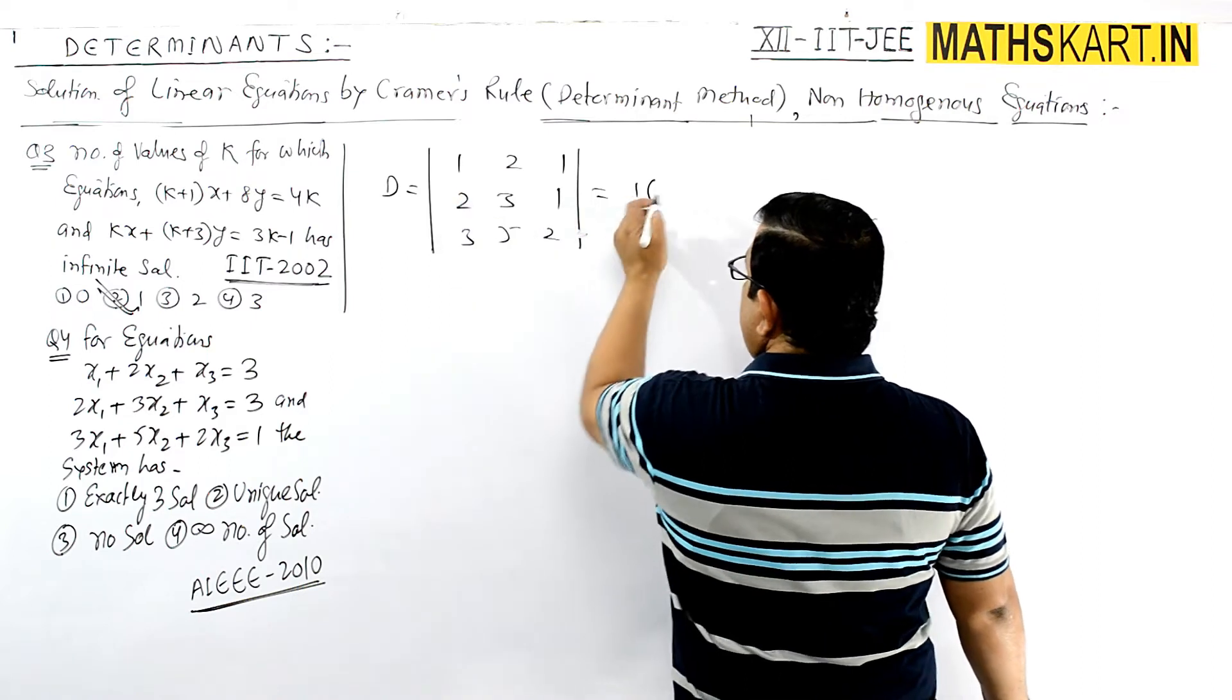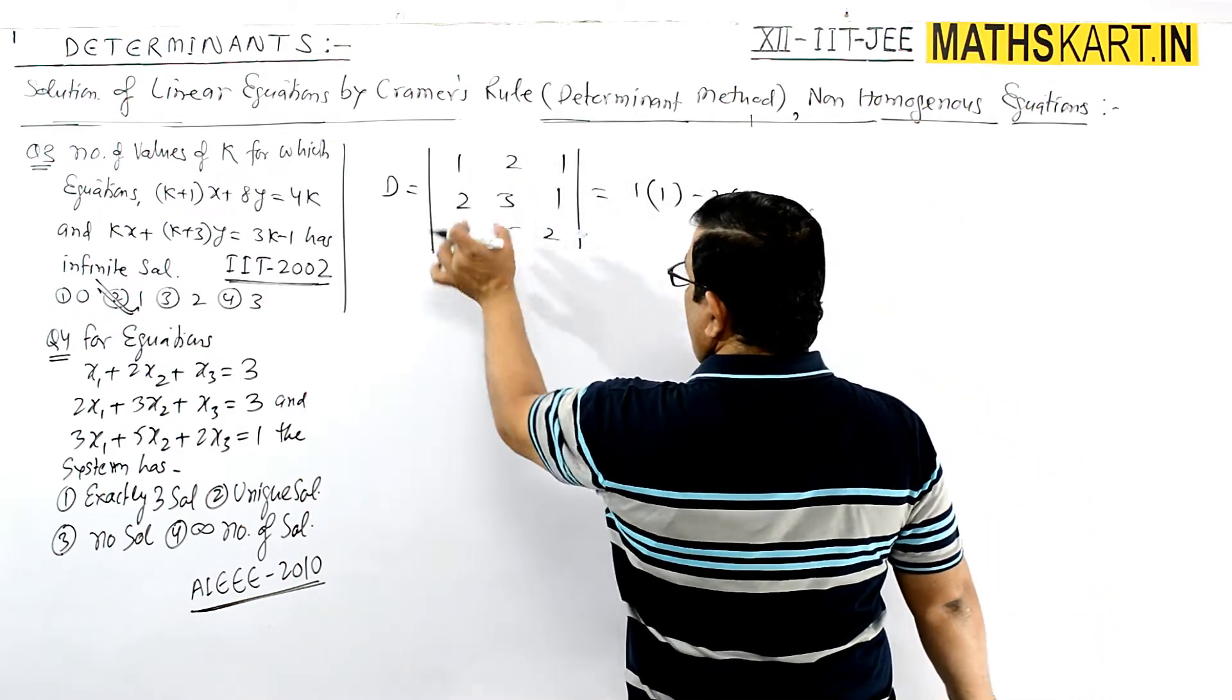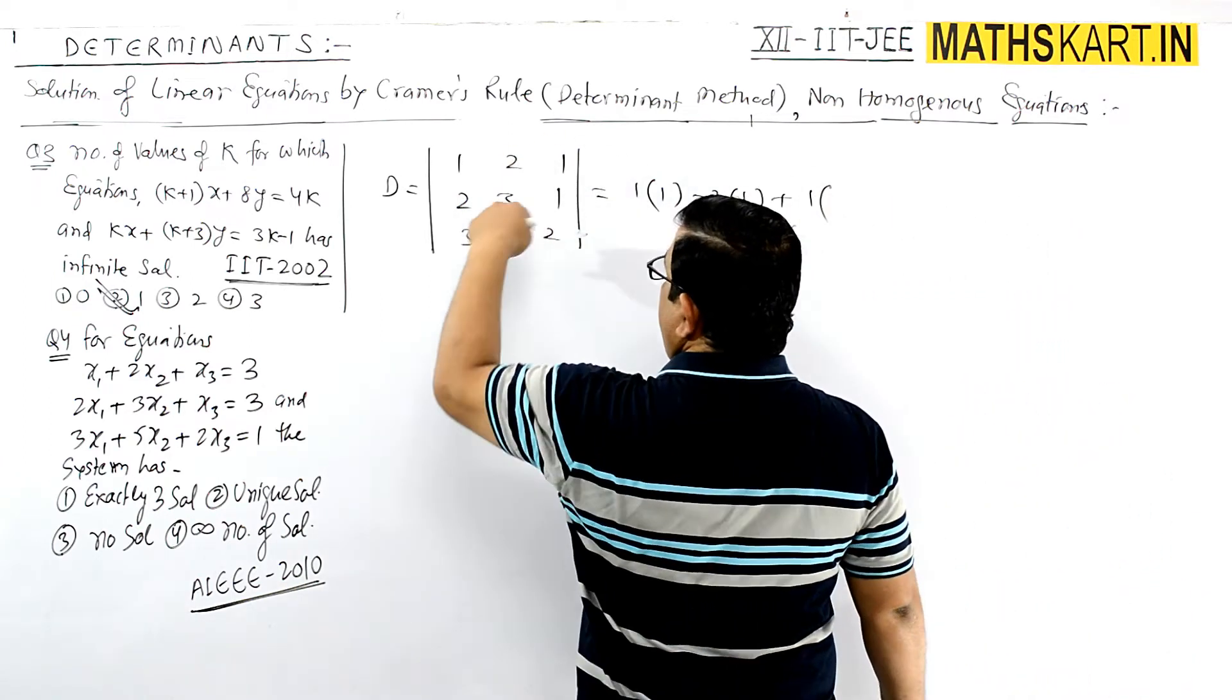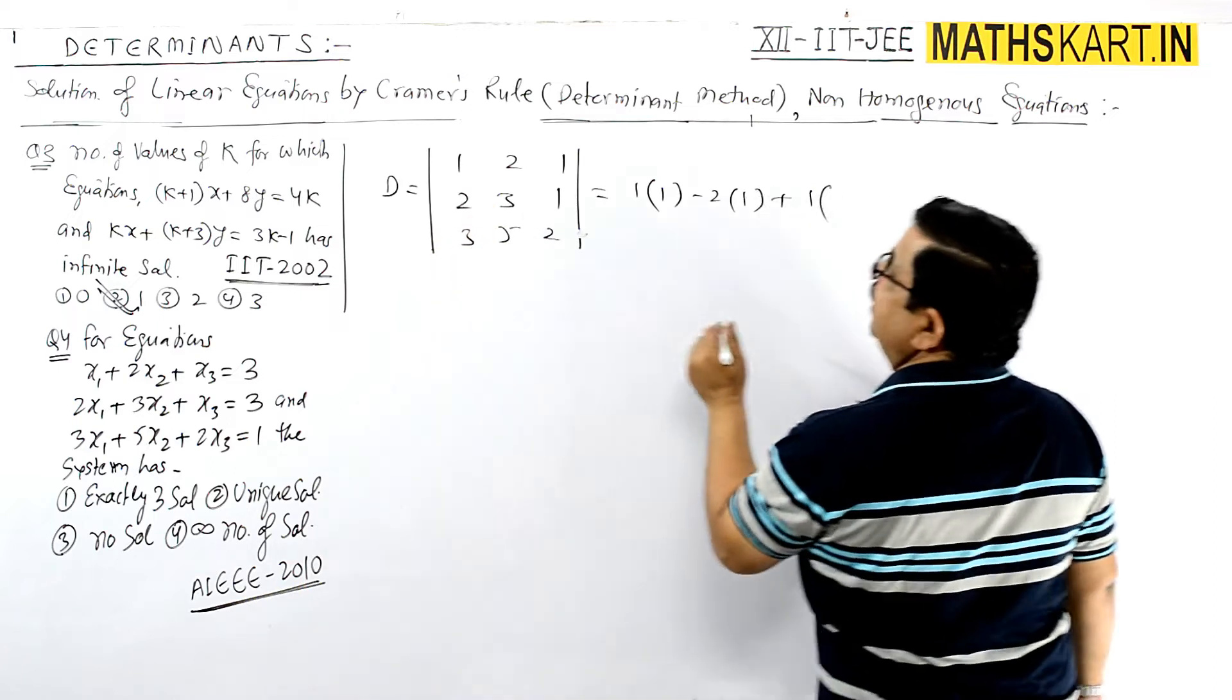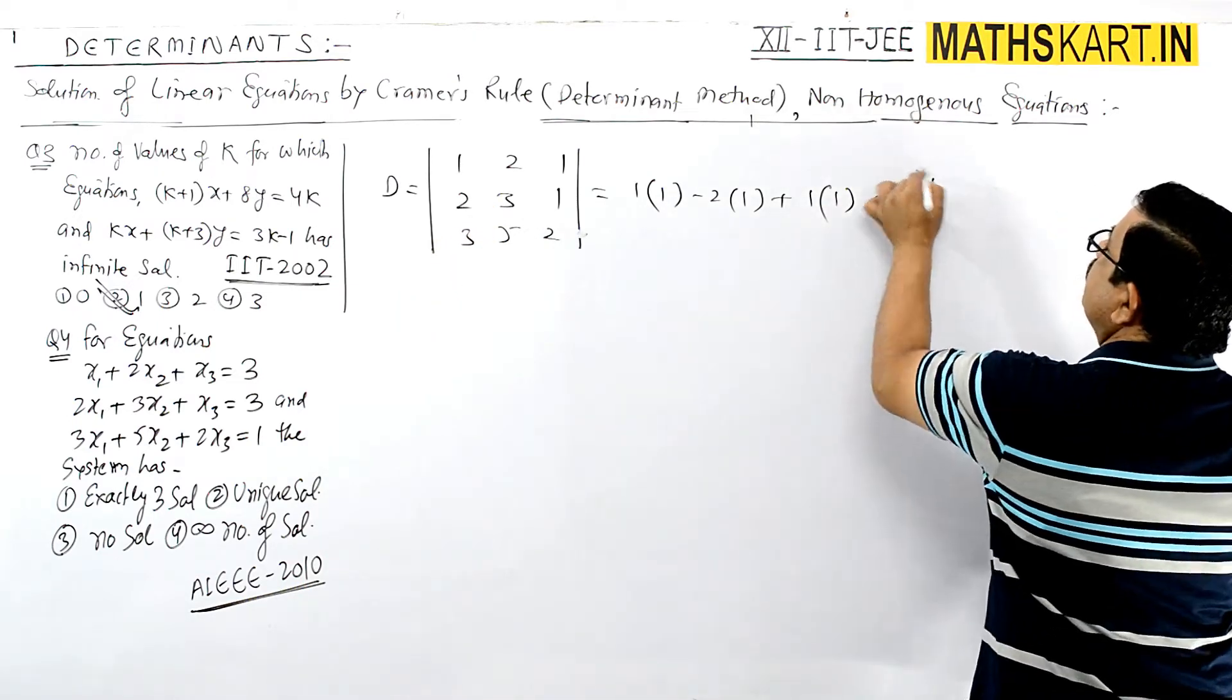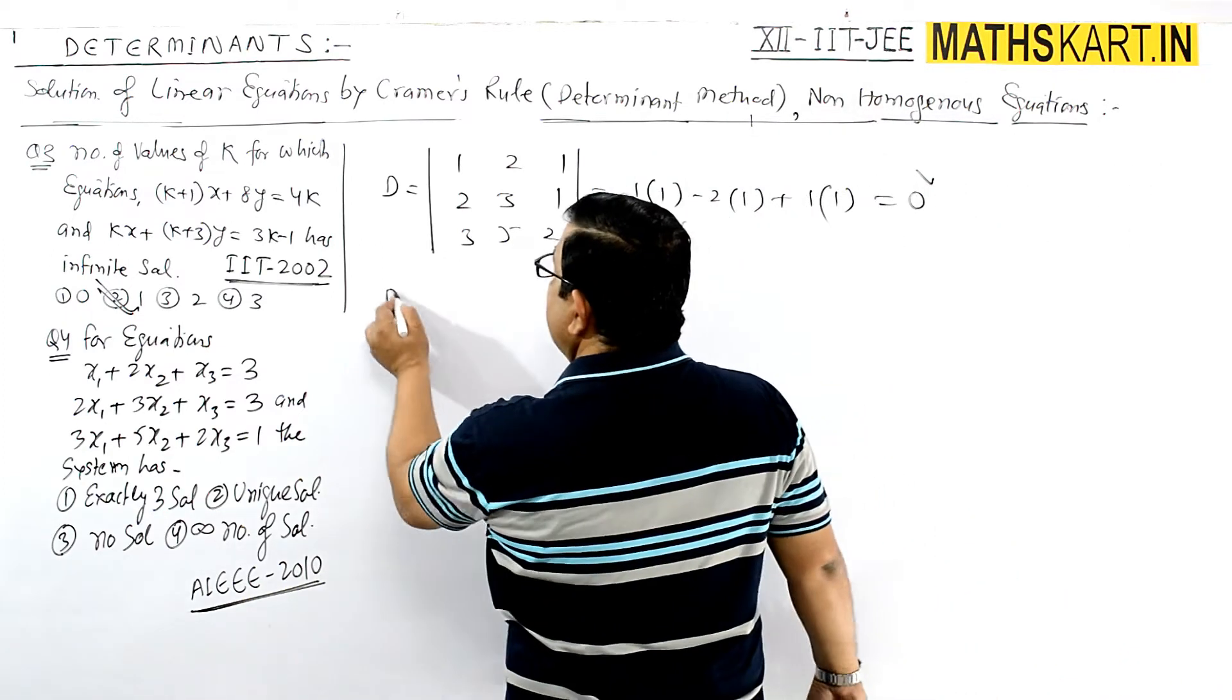Expanding along the first row: 1(6-5) - 2(4-3) + 1(10-9) = 1 - 2 + 1 = 0. So D = 0. Now we'll check D1.